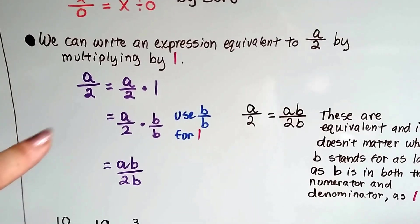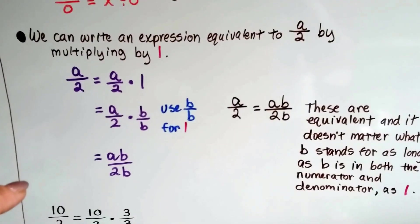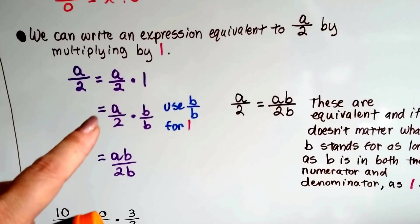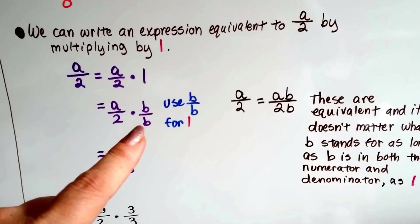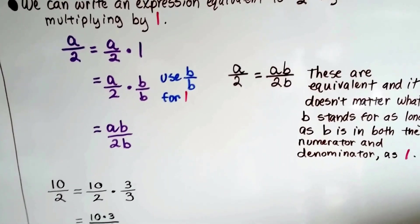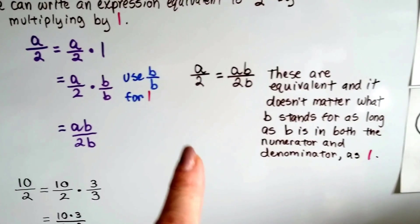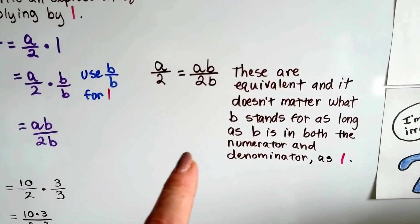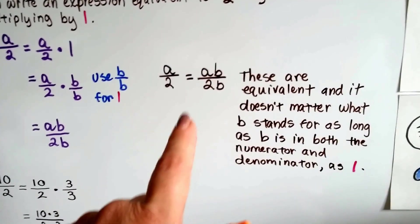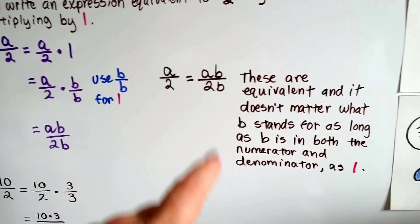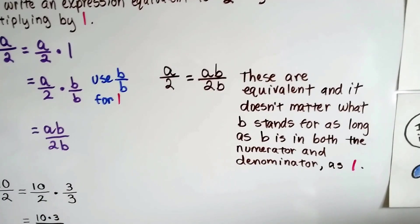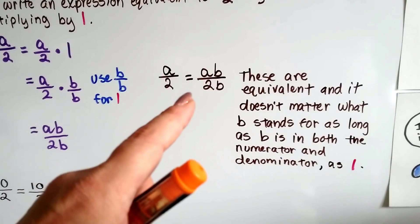So we can write an expression equivalent to a over 2 by multiplying by 1, as long as that is not a 0 denominator. So if we have a over 2, it's going to equal a over 2 times 1, and we can substitute b over b as the 1. So we can do a over 2 times b over b, which gives us ab over 2b. These are equivalent, and it doesn't matter what b stands for as long as b is in both the numerator and denominator. We could also have a times x over 2 times x, or a times 3 over 2 times 3.